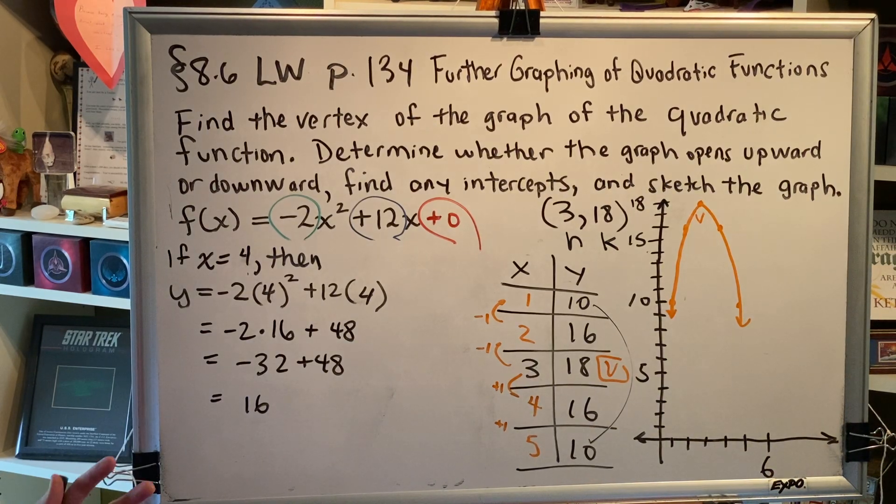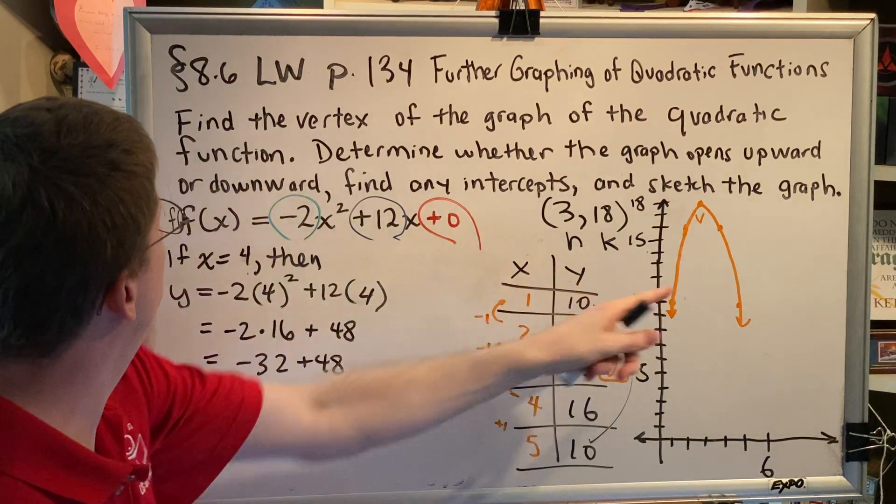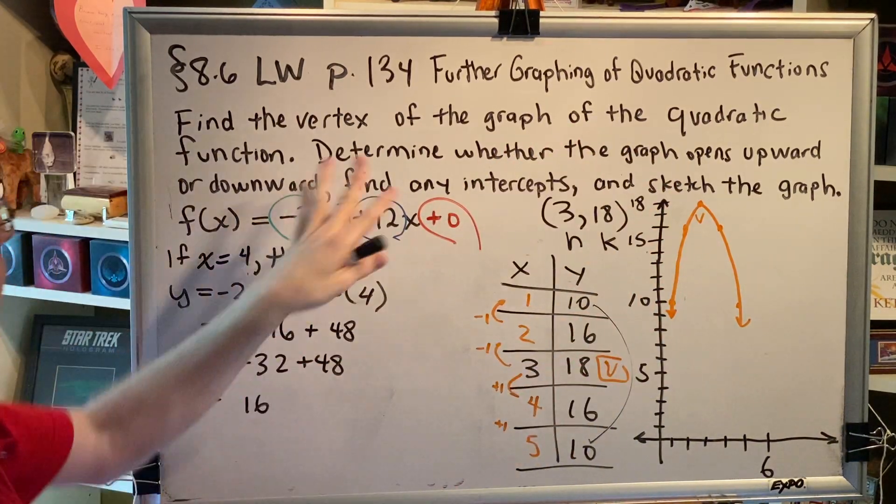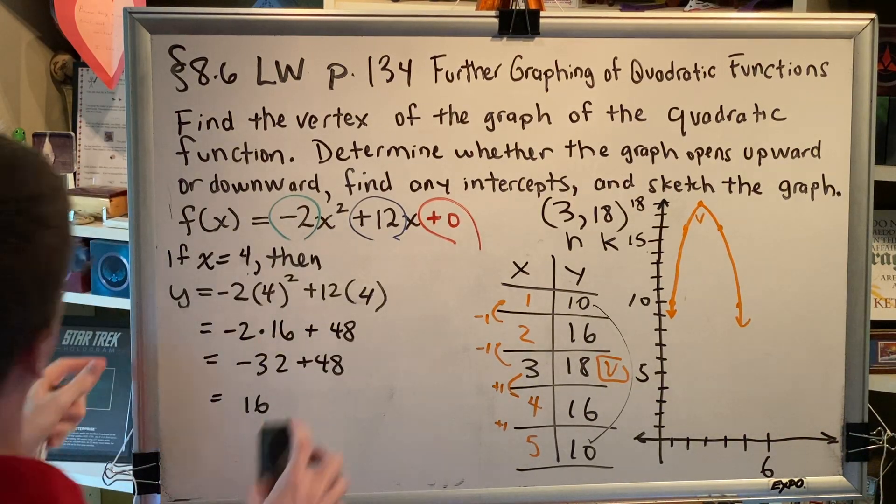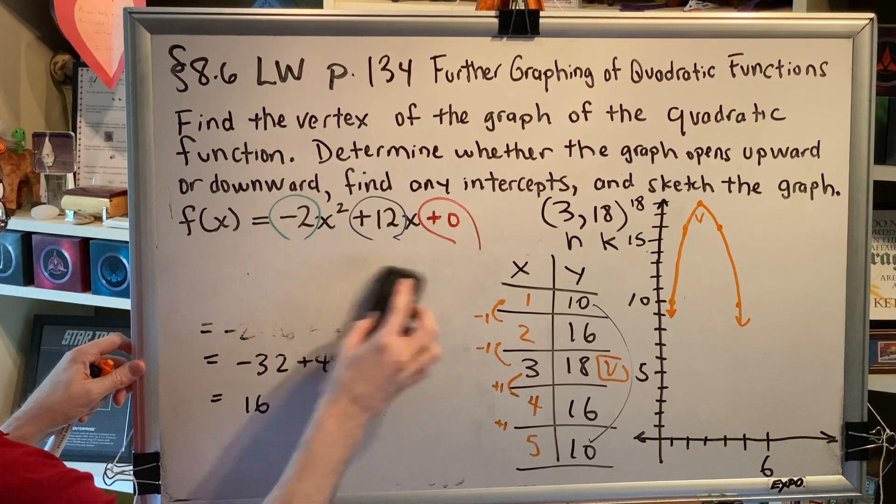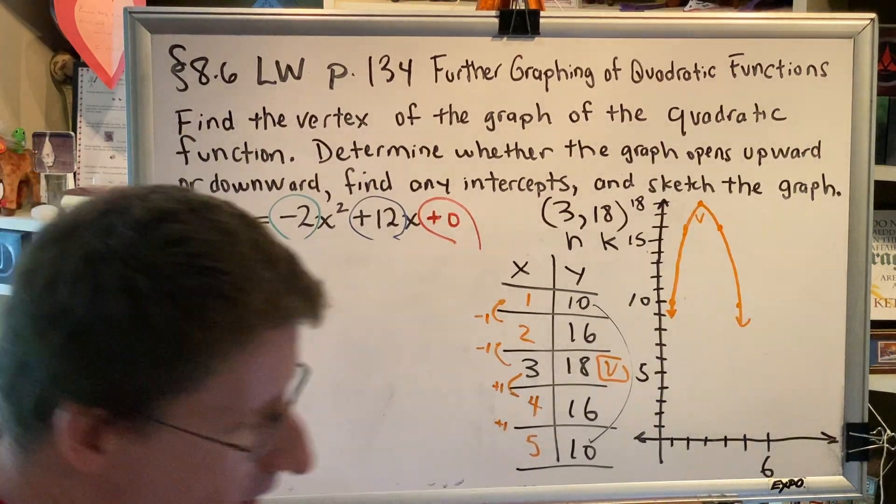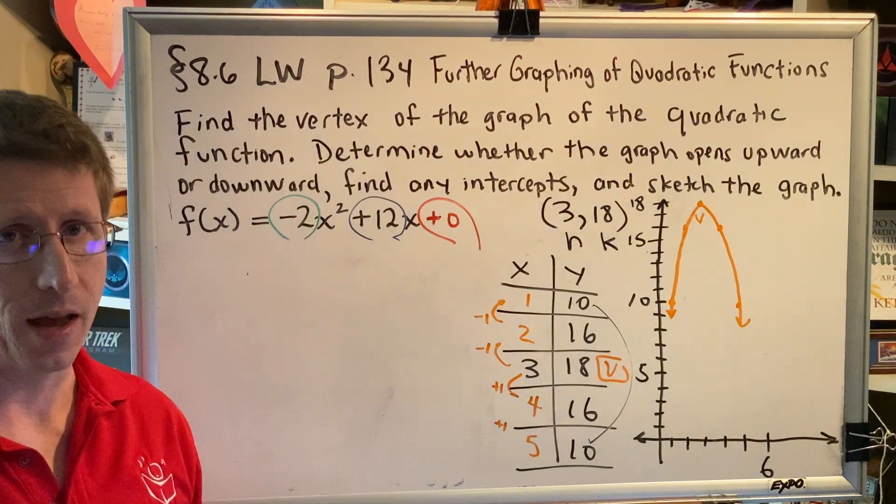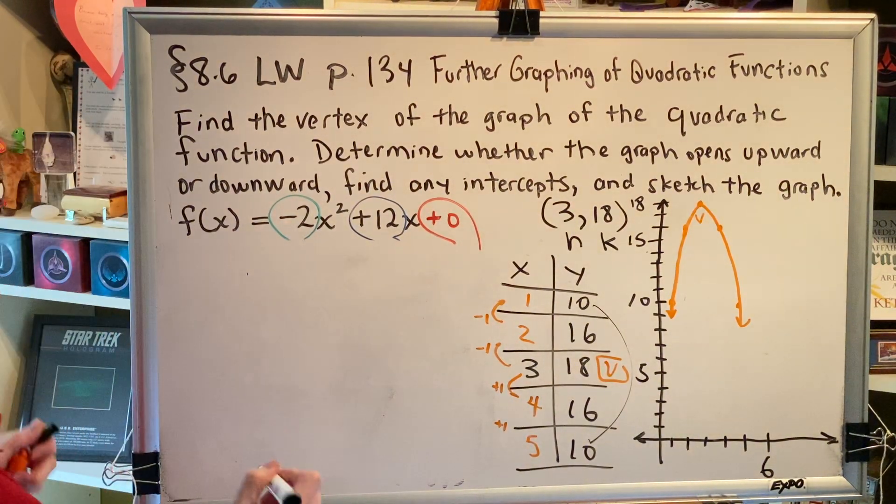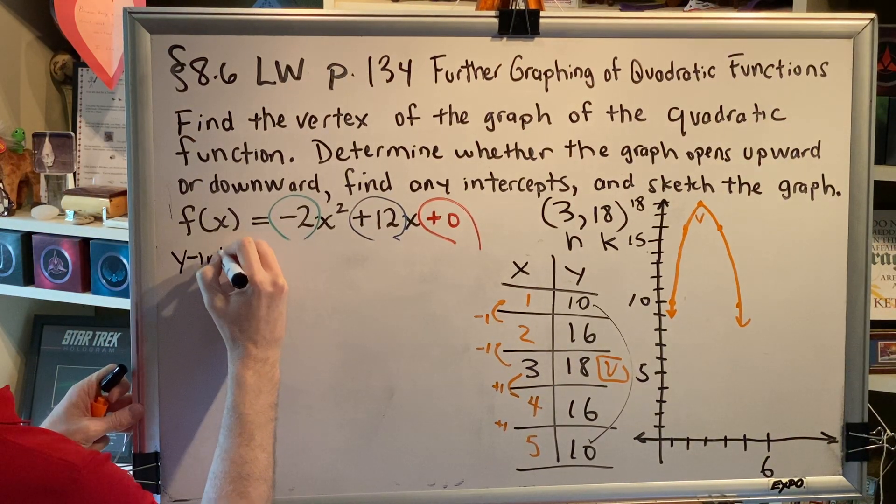So let's see what we've done so far. Determine whether the graph opens up or down. It opens down. Sketch the graph. We've sketched the graph. Find any intercepts. The intercepts is the last part of this problem. Remember that the most important characteristic of an x-intercept is that y equals 0. And the most important characteristic of a y-intercept is that x equals 0.